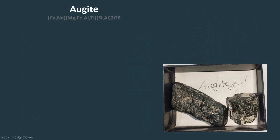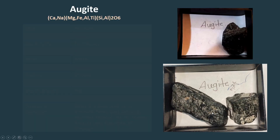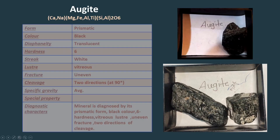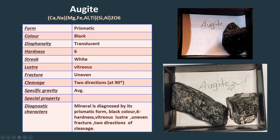Next, augite mineral, which can be diagnosed by its prismatic form, black color, six hardness, vitreous lustre, uneven fracture, and two-directional cleavage at 90 degrees.